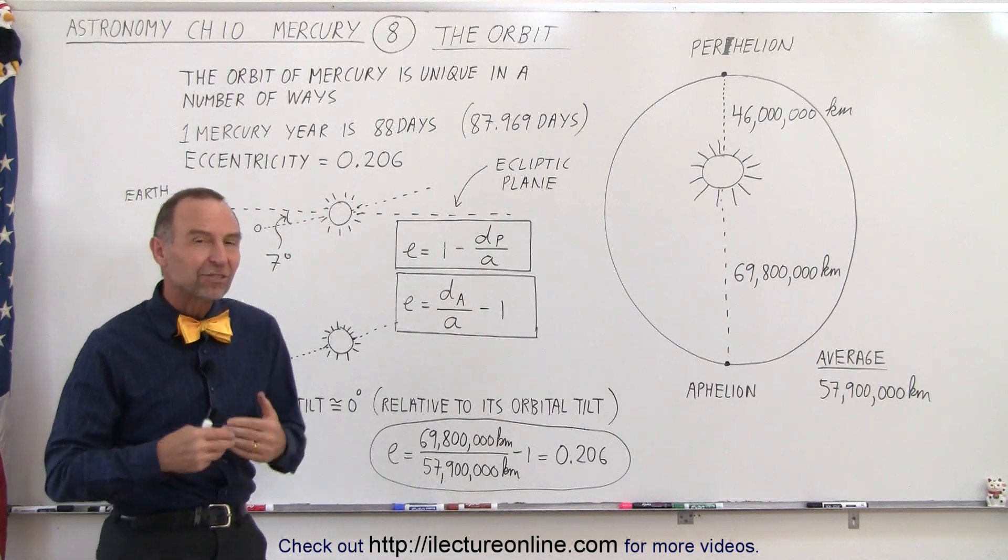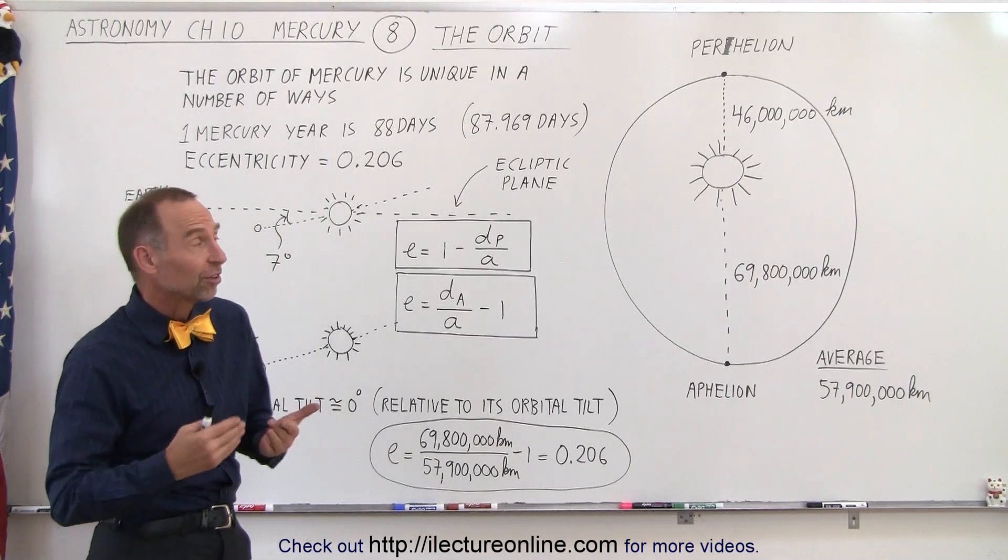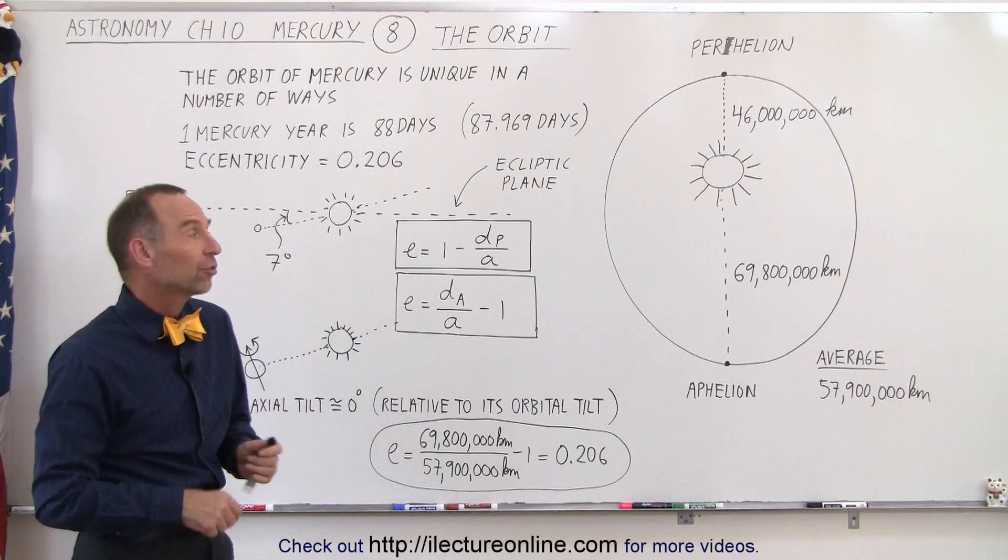For one, the eccentricity of the orbit is very large, the largest eccentricity of any of the eight planets in the solar system.